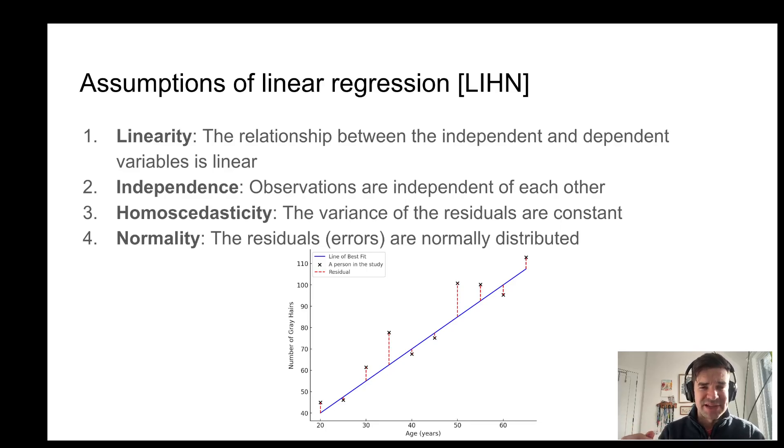So L stands for linearity. Relationship between the independent and dependent variables is linear. If instead it was like a U-shaped curve or an S-shaped curve, well, of course, linear regression is the wrong tool to use because, again, linear regression works well predominantly as a general rule when you have a linear association.